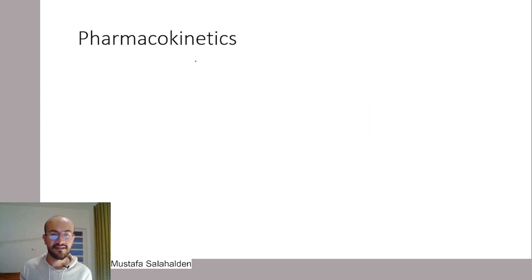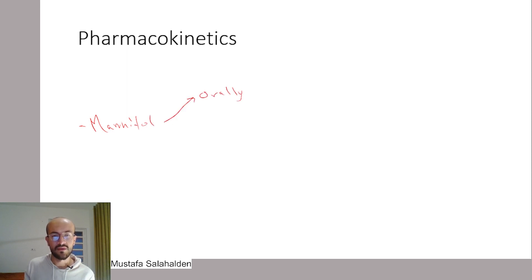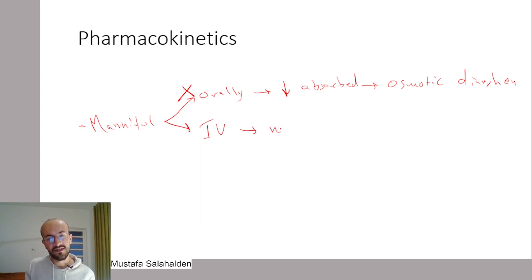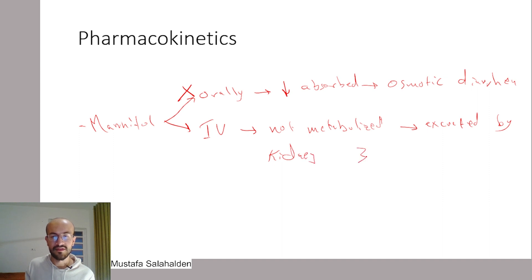Now let's talk about the pharmacokinetics of mannitol. If taken orally, it is not well absorbed by the GI system, so it would cause osmotic diarrhea rather than osmotic diuresis. Therefore it is usually not taken orally; it is taken intravenously. It is not metabolized and is excreted by the kidney in 30 to 60 minutes, which is the timeframe by which mannitol works.